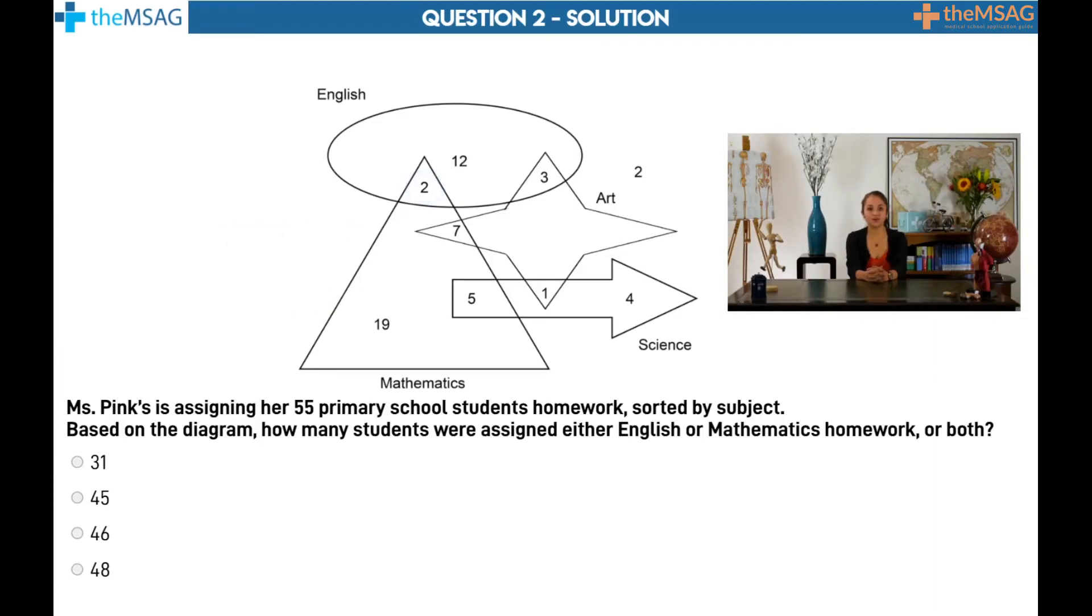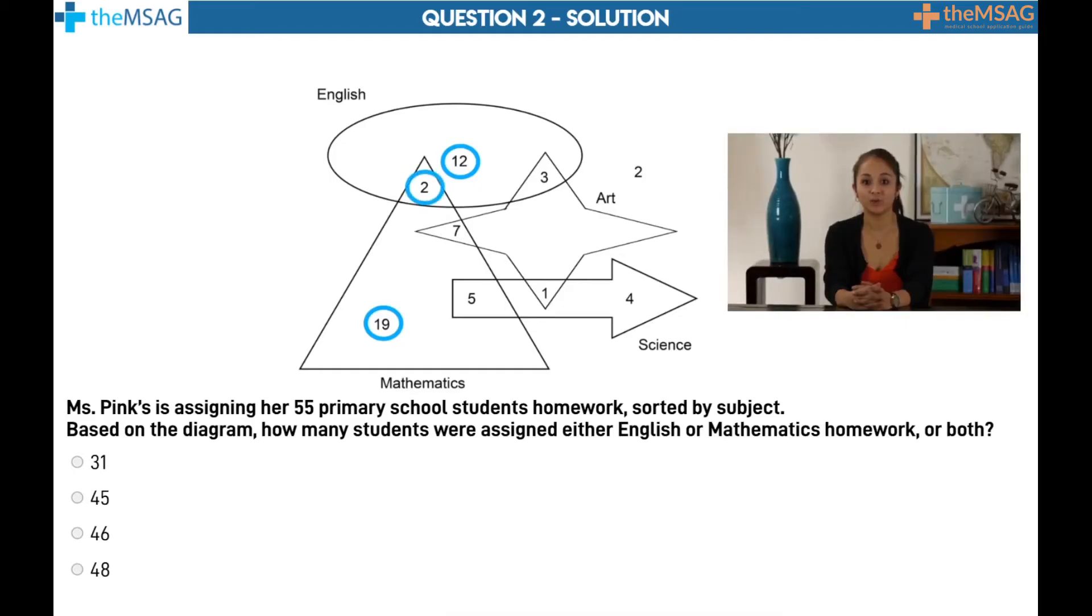Another easily made mistake is to not read the question properly and only add up the students who were assigned only English homework which was 12, only mathematics homework which was 19, both English and mathematics which was 2, giving the answer 33. This isn't even an option so you would have realized you had made an error but in doing so lost valuable time. So don't forget always read the question fully.